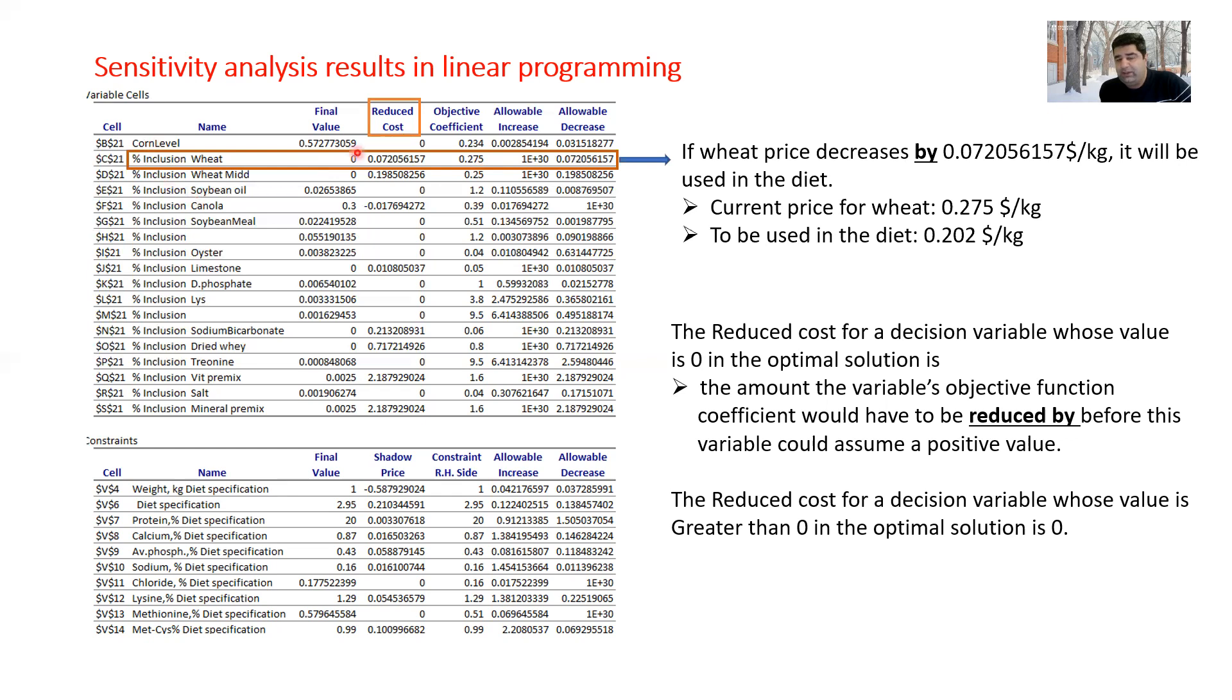The sensitivity analysis shows me if the wheat price comes down by this amount in reduced cost, then it will be used in my diet. The current price for wheat is 0.275 dollar per kilogram, which is shown under the objective coefficient. If it comes down by 0.072 dollar per kilogram, it would come to 0.202 dollar per kilogram.